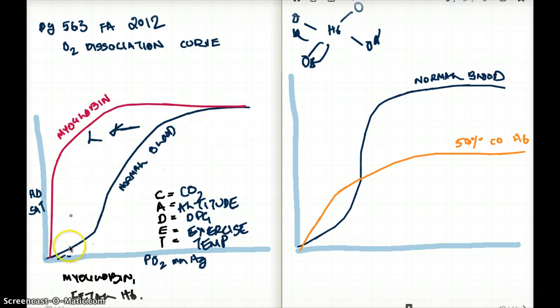Look at myoglobin. Myoglobin does not have a sigmoidal shape, and that's because myoglobin has hemoglobin, but it only can bind to one oxygen molecule. So myoglobin does not have this cooperative relationship, so myoglobin only binds to one molecule of oxygen.